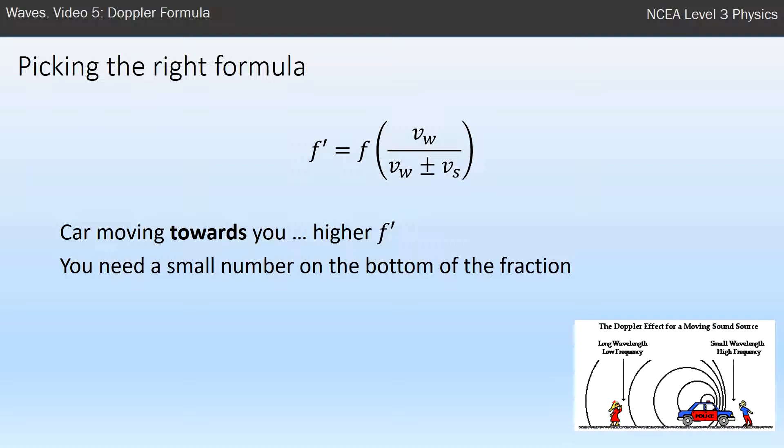To get a small number on the bottom of the fraction, we need to use minus. So with a car moving towards you, I think high frequency, then I look at the formula and I say, how can I get a high observed frequency? I want the bottom of the fraction to be smaller, that happens with the minus sign. So you may need to be able to do these steps yourself.